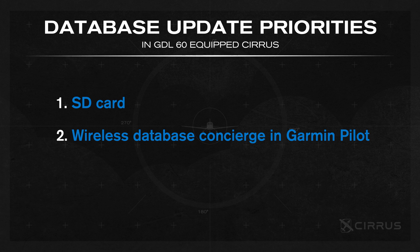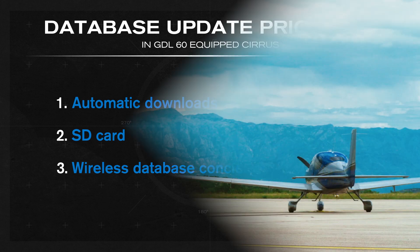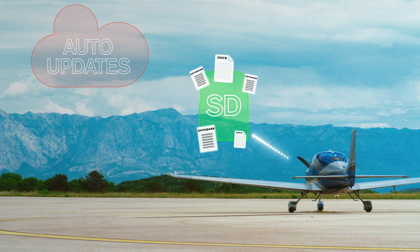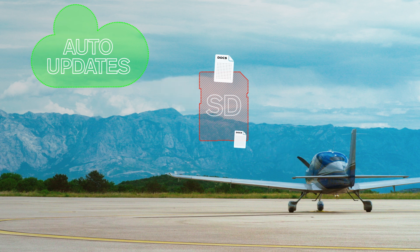Number two, through the wireless database concierge in Garmin Pilot. And then three, the lowest priority, would be automatic downloads. So that means, to ensure that automatic database updates have effectively been bumped to the top of that priority list, confirm that all SD cards installed in the PFD or MFD do not have any database files stored on them. That way, the avionics will skip the SD cards when looking for new databases and move directly to the GDL60 to enable automatic, over-the-air database updates. To be clear, all other document files can remain on the SD cards — you just need to remove those database files.